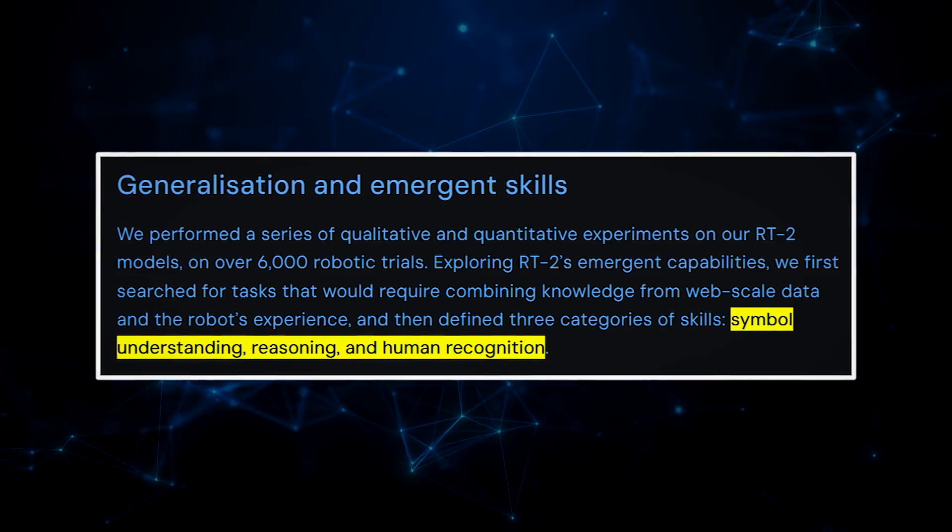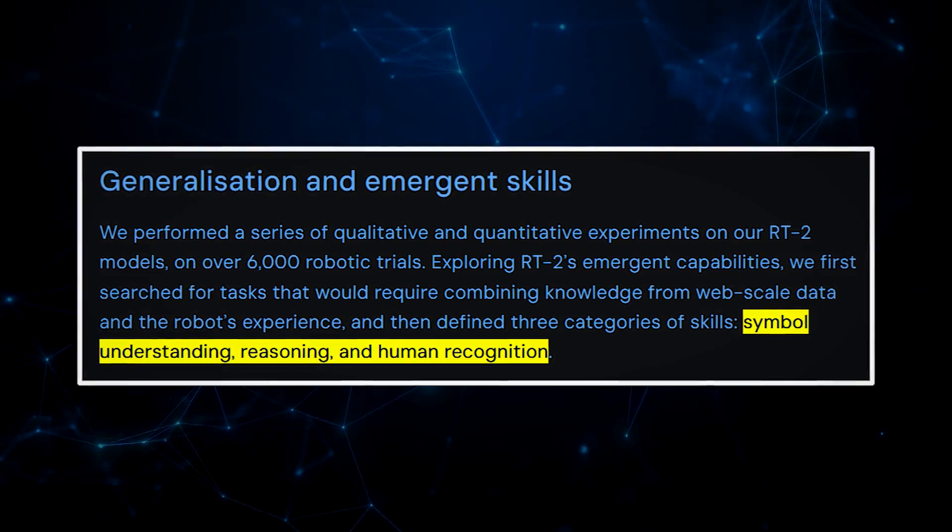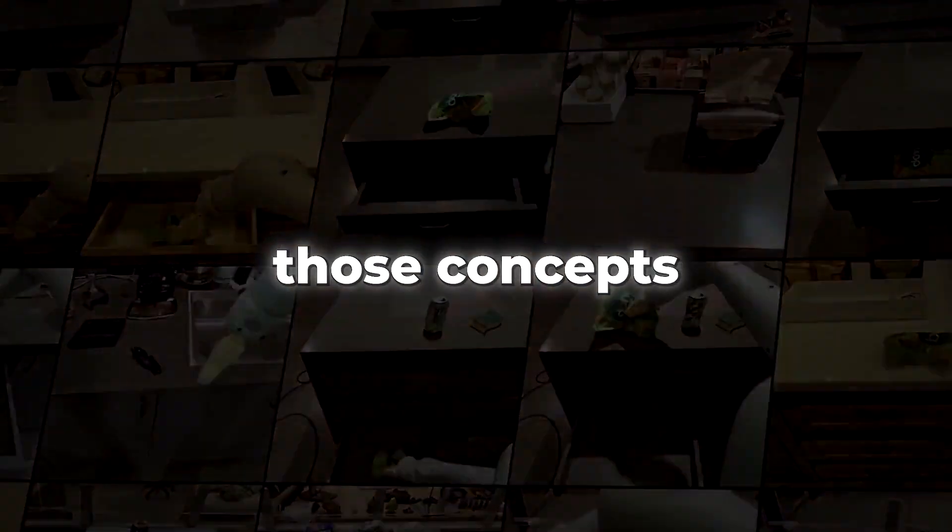They defined three mind-blowing categories of skill: Symbol understanding, reasoning, and human recognition. These tasks required RT2 to understand visual semantic concepts and perform jaw-dropping robotic control on those concepts.